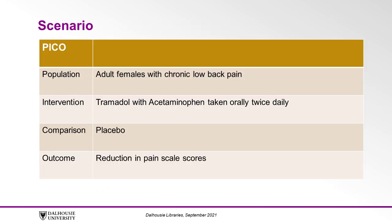For our search, let's start with the PICO question we showed you in the previous modules concerning adult females with chronic low back pain. As a reminder, the population is adult females with chronic low back pain. The intervention is tramadol with acetaminophen taken orally twice daily. The comparison is a placebo, and the outcome is a reduction in pain scale scores.